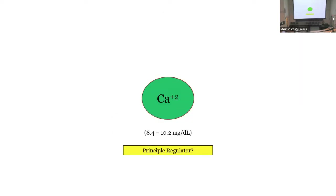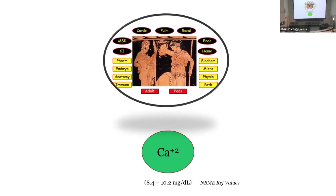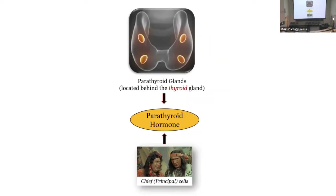A lot of this isn't headline news, but it leads somewhere — everything builds to its crescendo. So what's the principal regulator of calcium? Parathyroid hormone. Where does parathyroid hormone come from? The parathyroid glands.